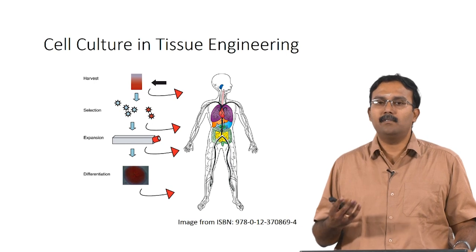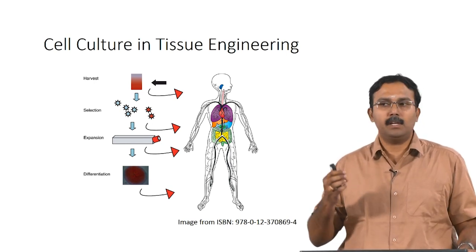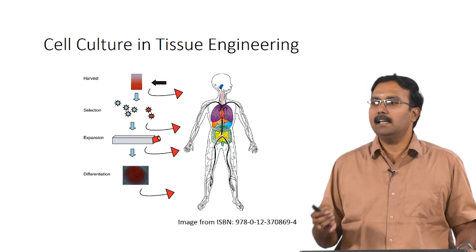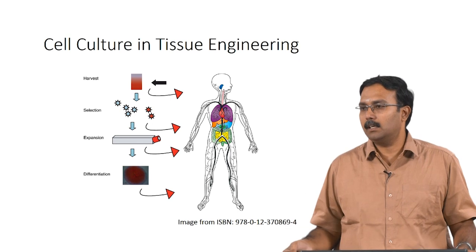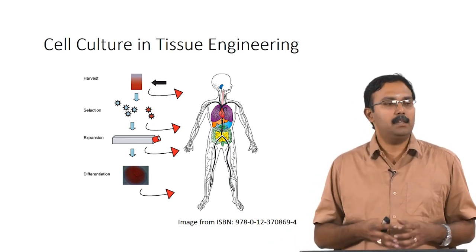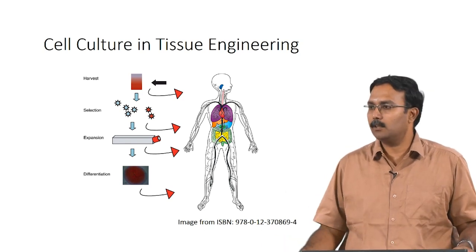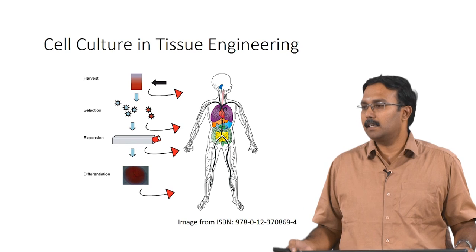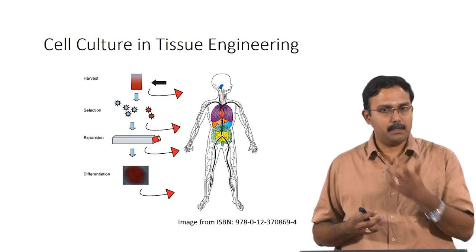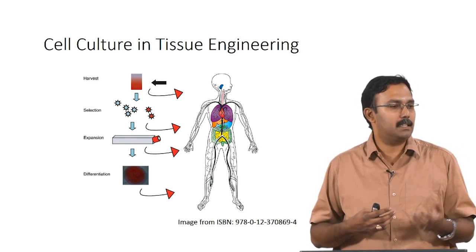You could also have selection which is a lot more specific, where you try to identify specific cell types you are interested in and take those cells for tissue engineering applications. It could either be in vitro or directly injected into a person for regeneration of the tissue. These are two options when talking about cell selection and harvesting.